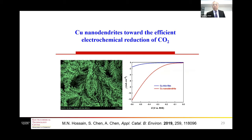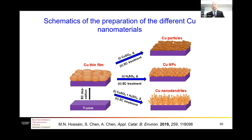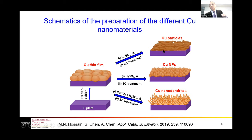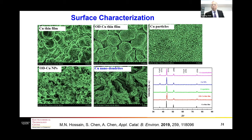The third example is the fabrication of copper nanodendrites. Starting from a titanium plate, we use electrochemical deposition to form a copper thin film. We then apply different treatments: drop casting of copper sulfate solution with heat treatment followed by electrochemical reduction forms copper particles; adding sulfuric acid with heat treatment after reduction forms copper nanoparticles; using both together produces copper nanodendrites.